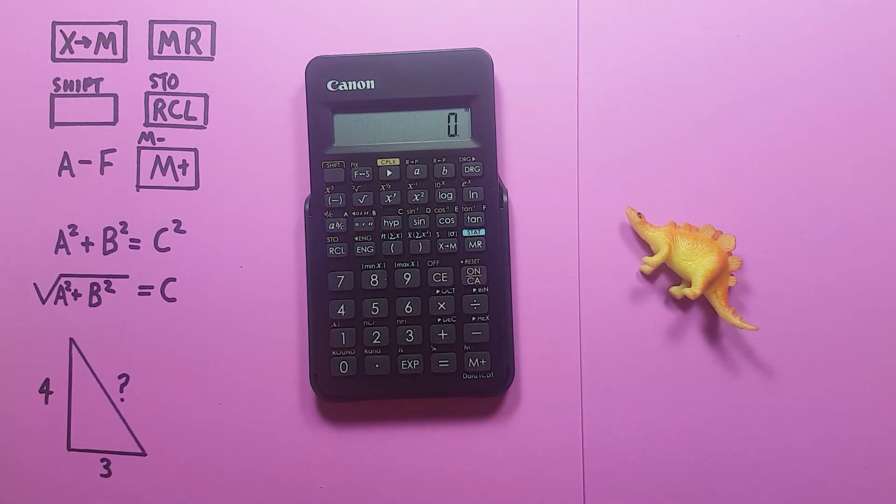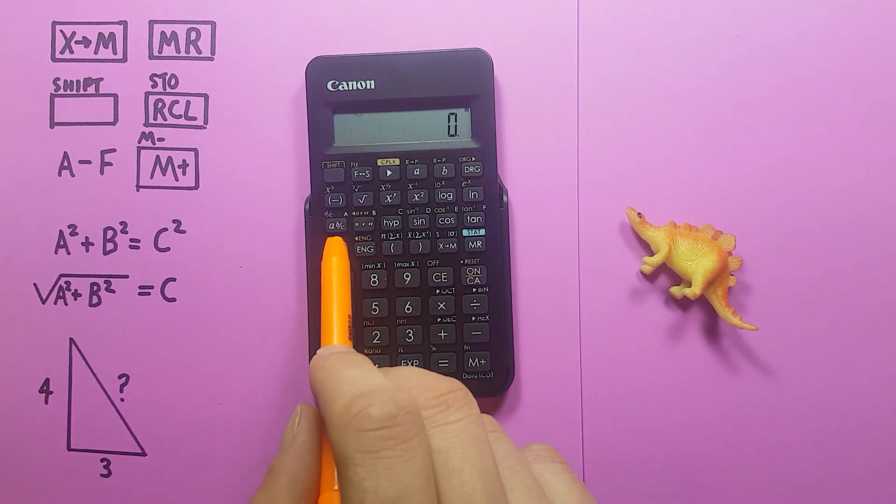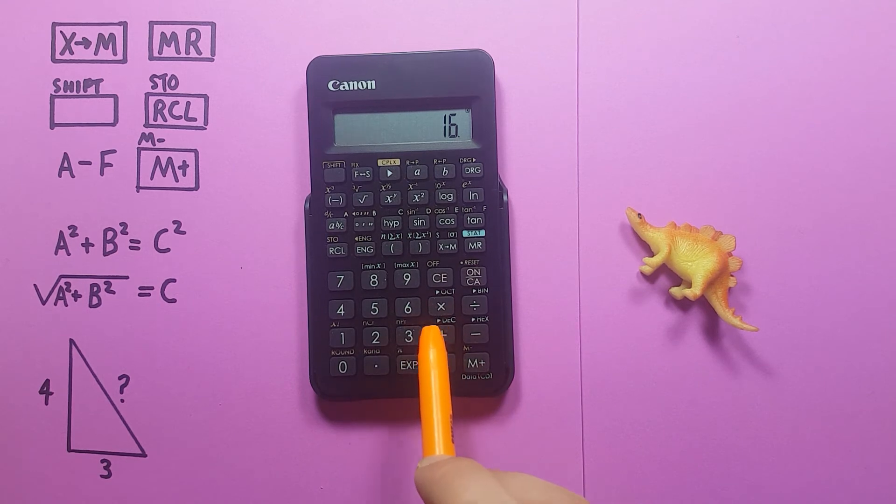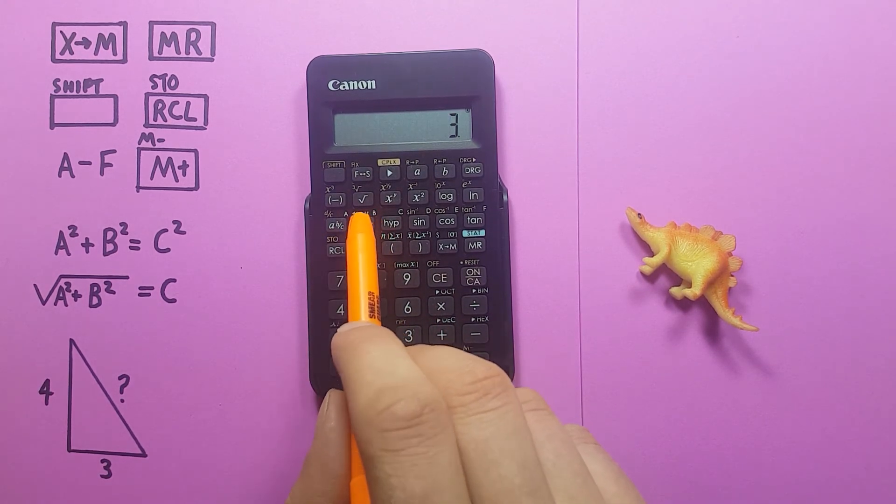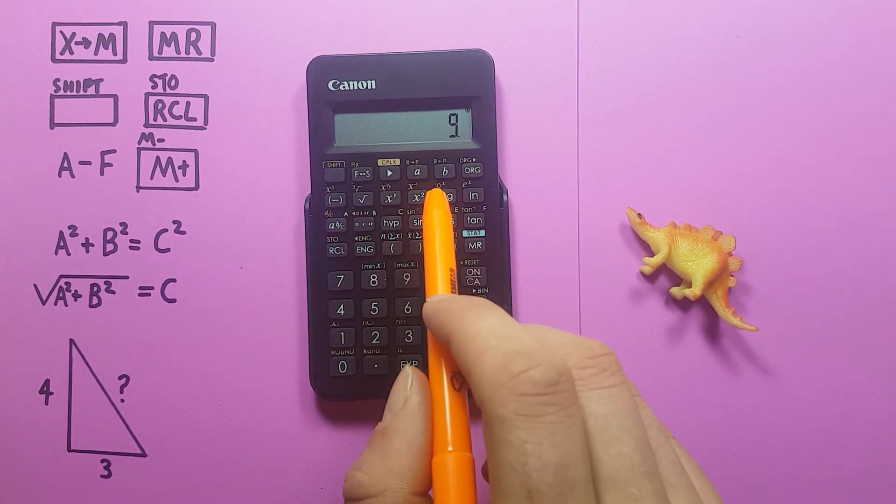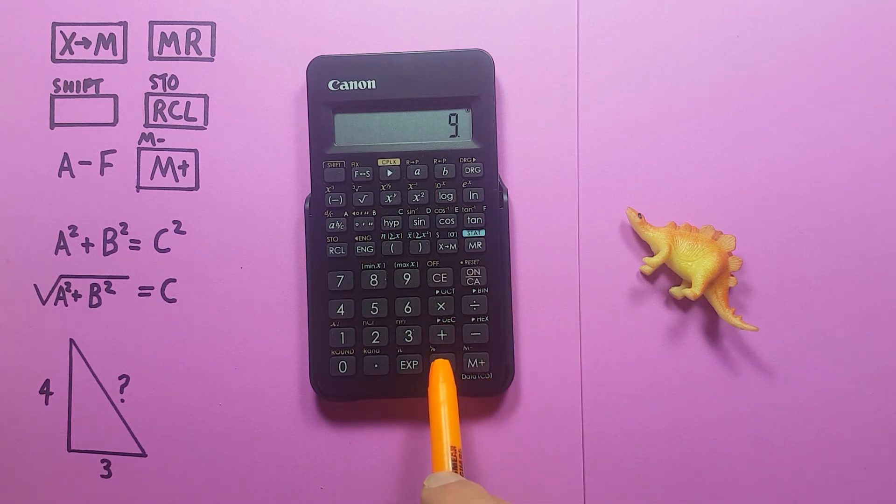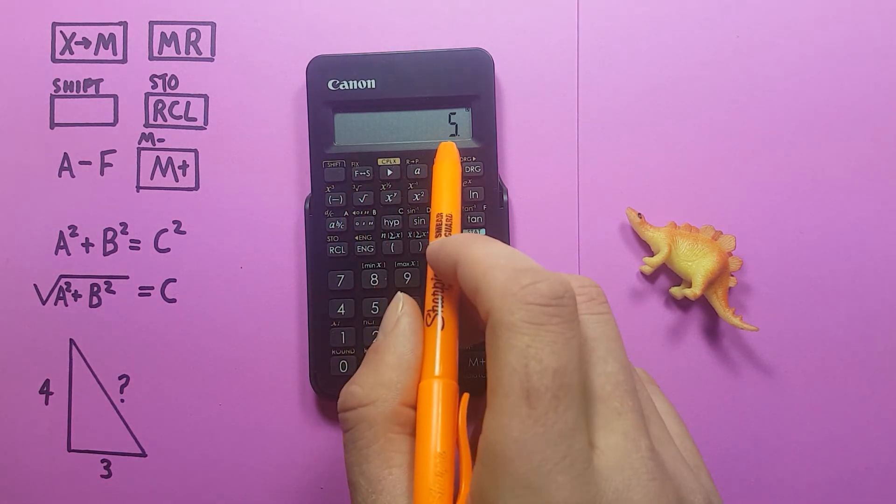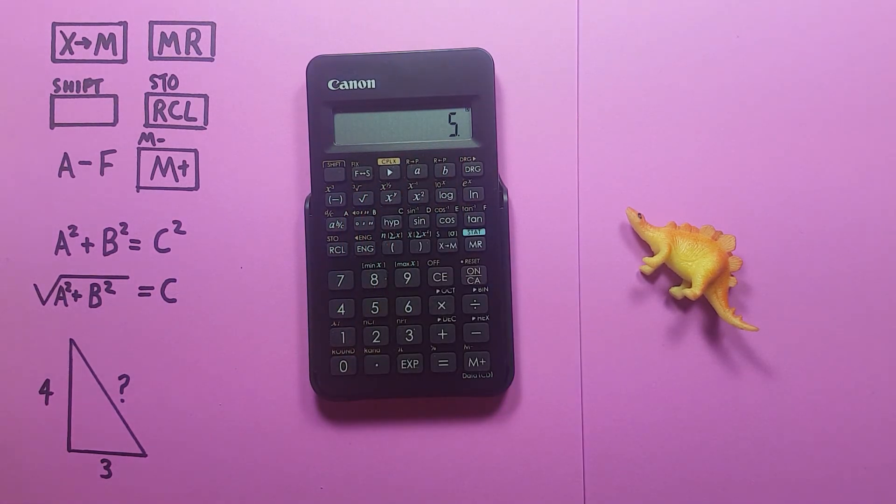Alright, on to the equation. So if we recall A squared plus recall B squared equals and then square root that, it gives us 5 which is the answer for C. Alright, I hope this helps and good luck on those tests out there.